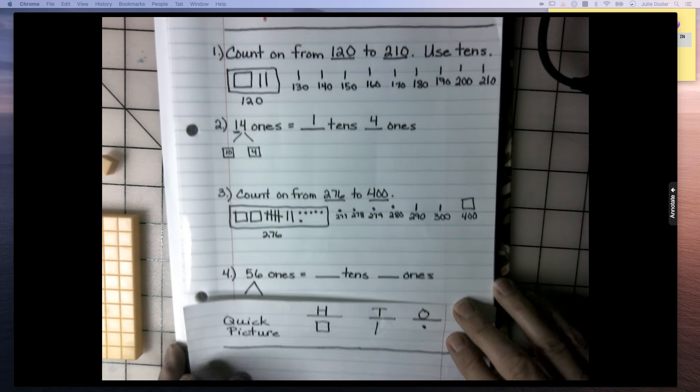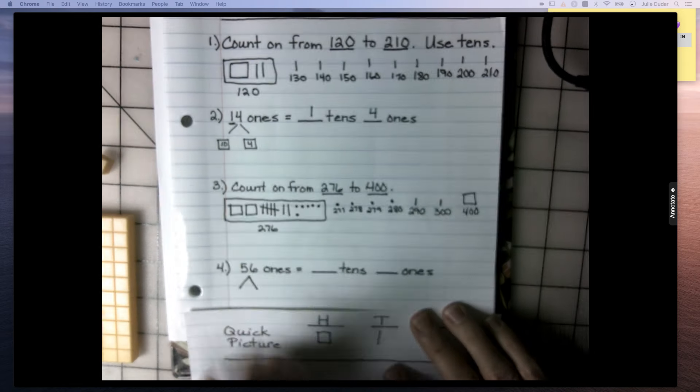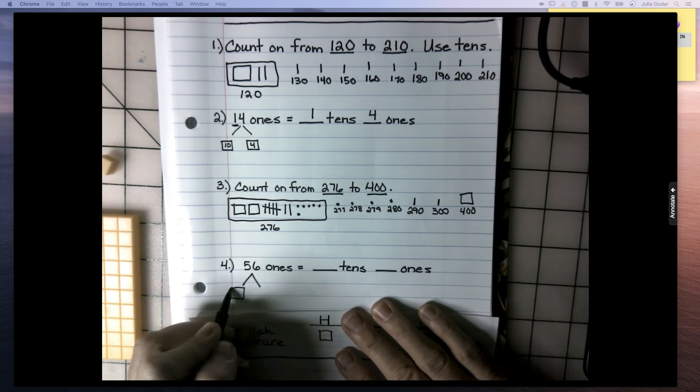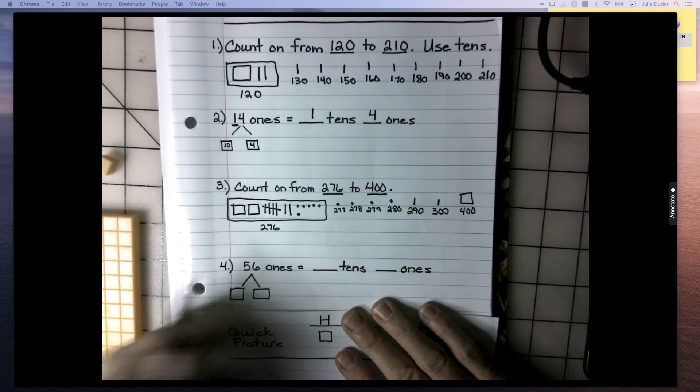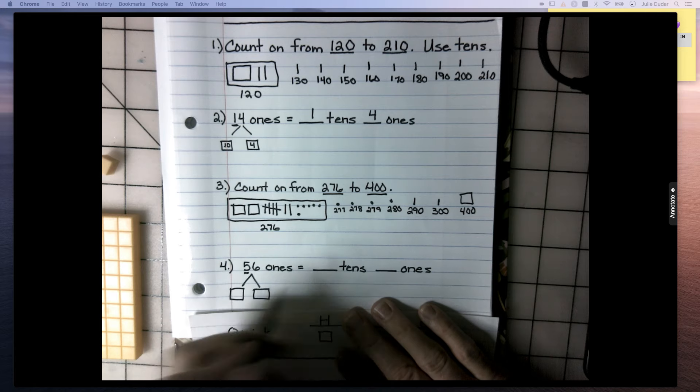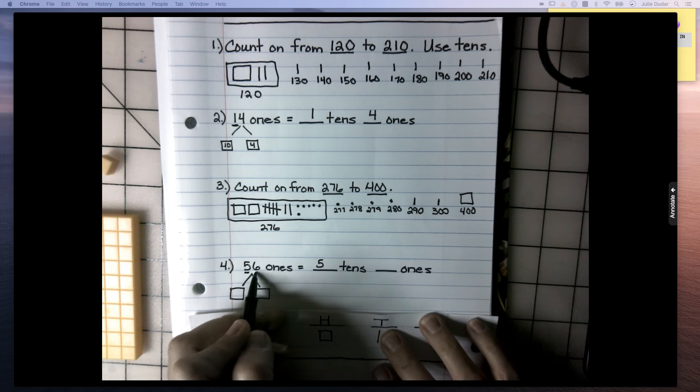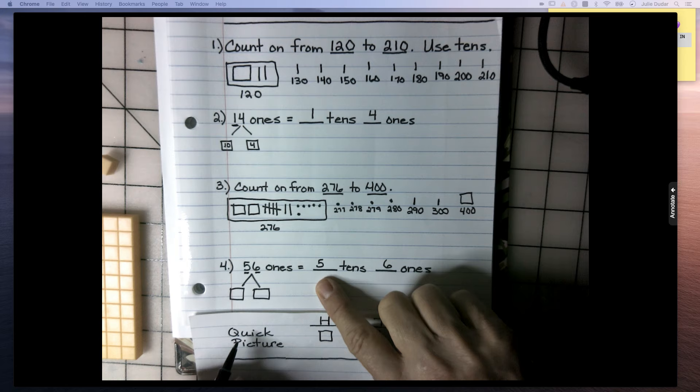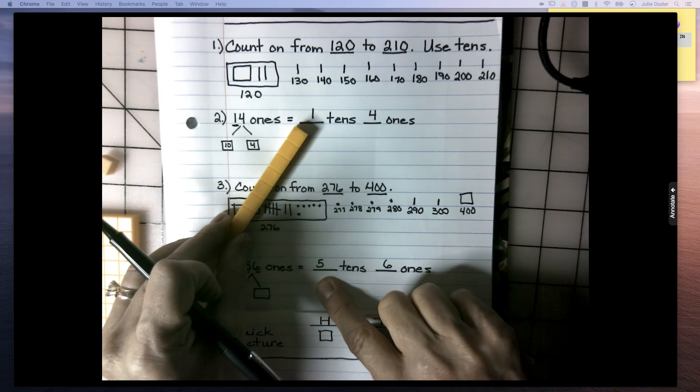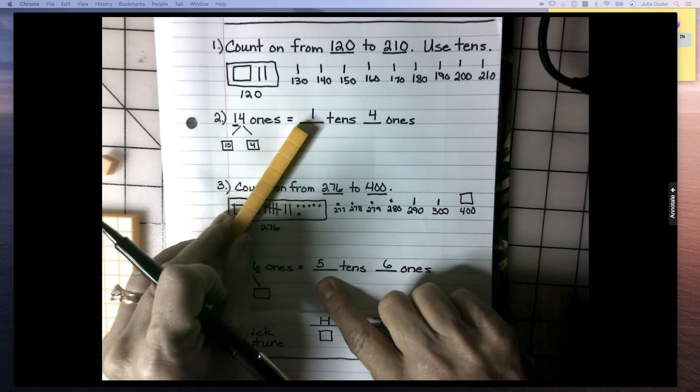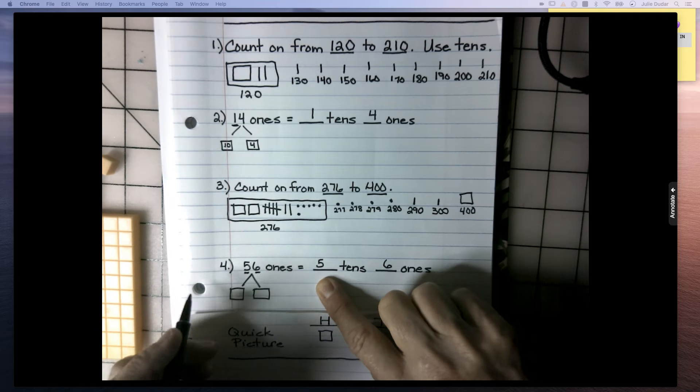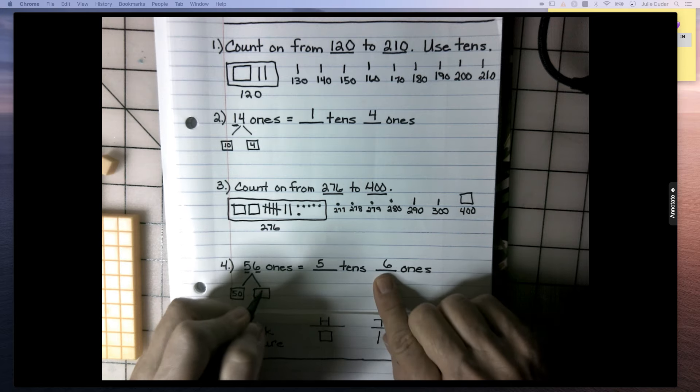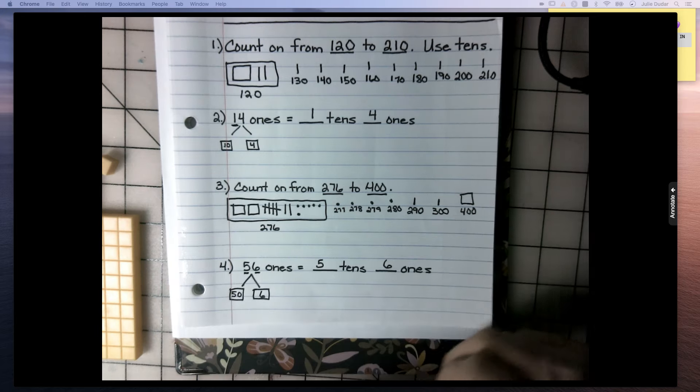All right, last one. This is like number 2. 56 ones. How many tens? How many ones? So we're going to decompose it. And how many tens is right there? 5 tens. How many ones? 6 ones. What is the value of 5 tens? If I counted 5 of these, what would I get? And hopefully you would say 10, 20, 30, 40, 50. And you have 6 ones left over.